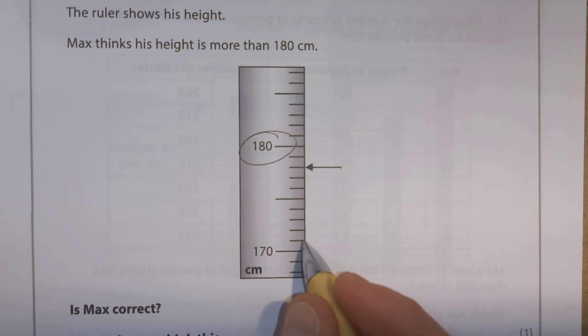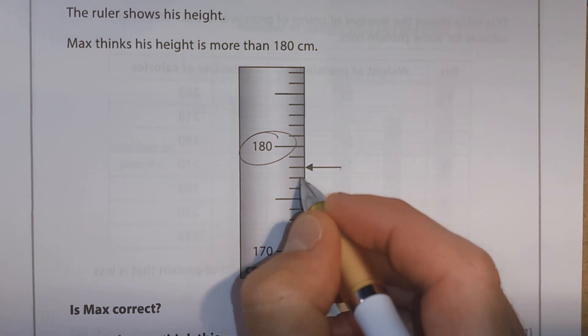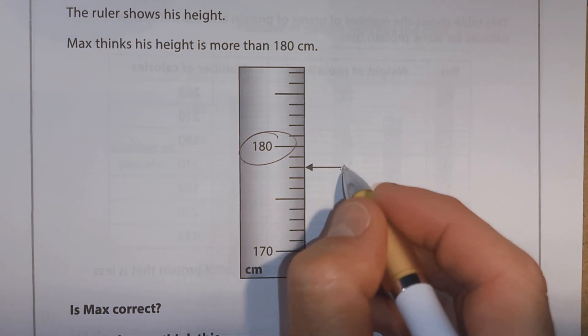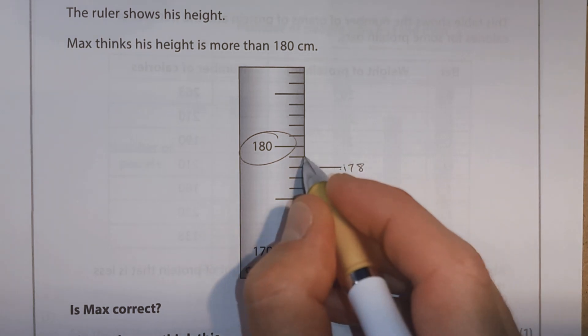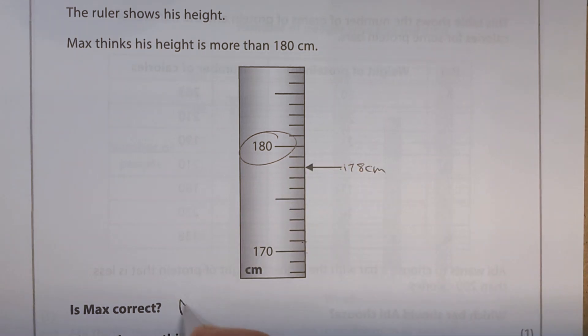In fact, let's see how much below. What are each of these worth? Let's see if they're worth 171, 172, 173, 174, 175, 176, 177, 178. Let's just check. 179, 180. Yeah. So is he correct? No.